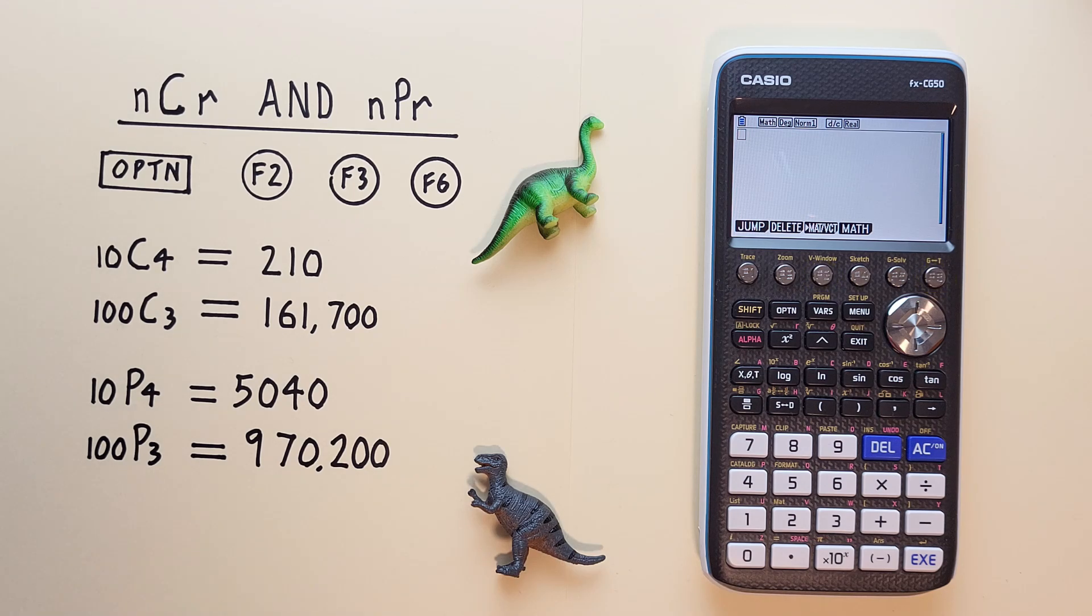Combinations are when you choose a number of objects from a set and the order they're chosen does not matter. For example, if we had a set of 10 and wanted to choose four items, and the order does not matter.